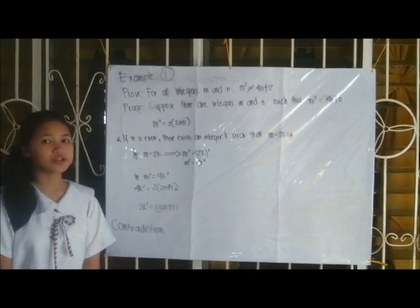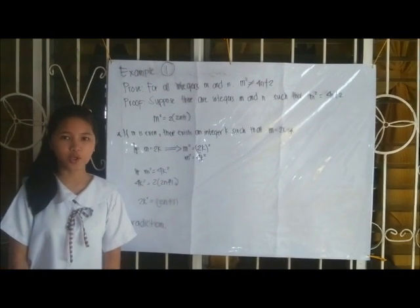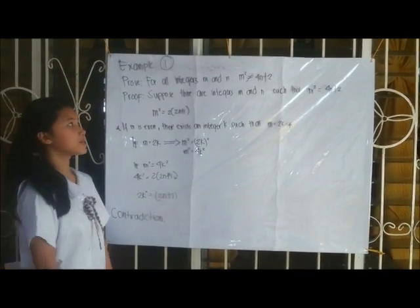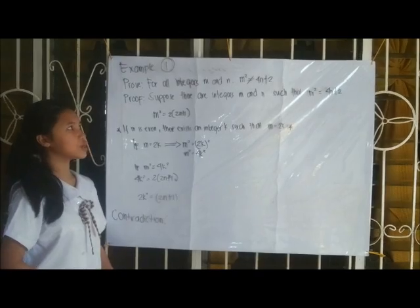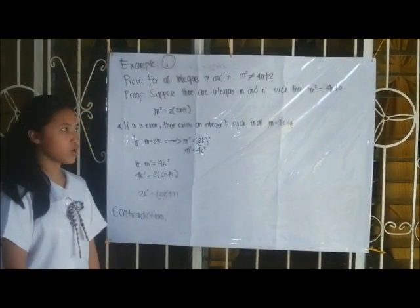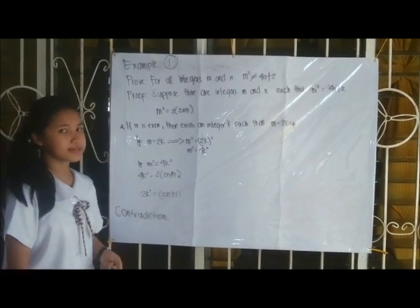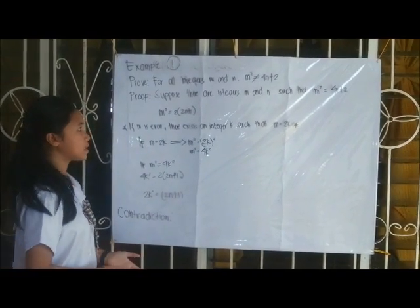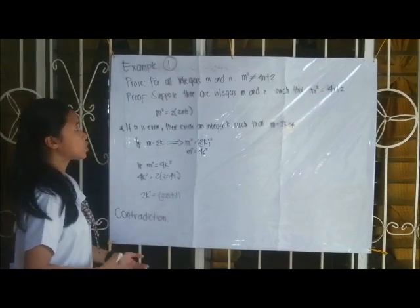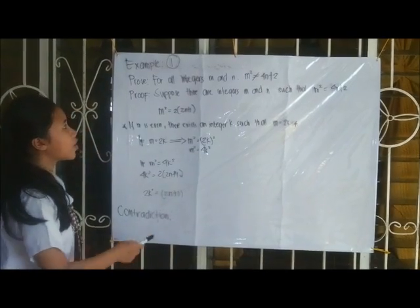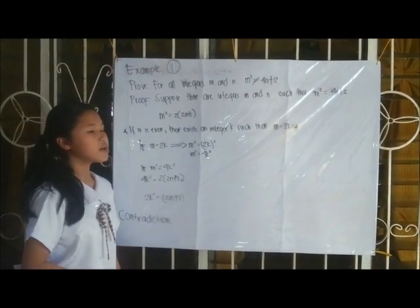To deepen your understanding in solving a statement indirectly, I will give you an example. Example number 1: Prove that for all integers m and n, m squared is not equal to 4n plus 2. In writing the proof, we write the opposite of the original statement. So suppose there exist integers m and n such that m squared is equal to 4n plus 2.